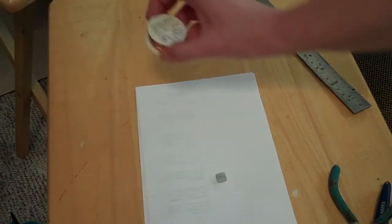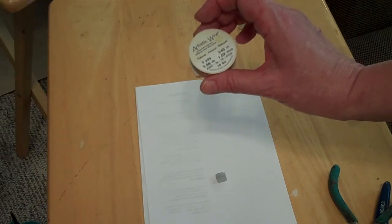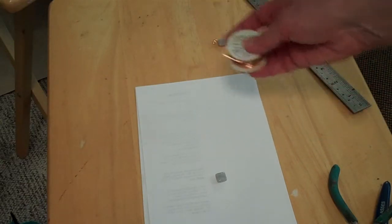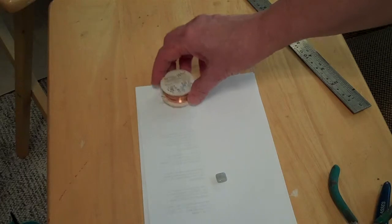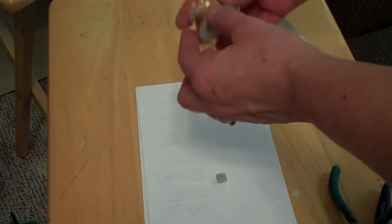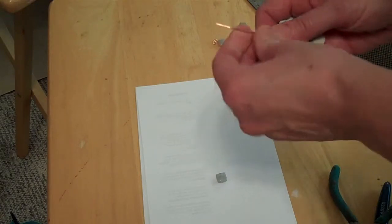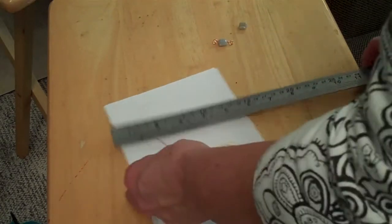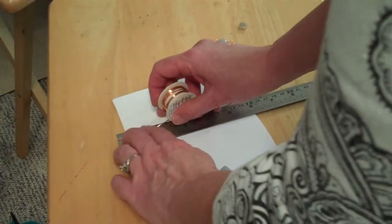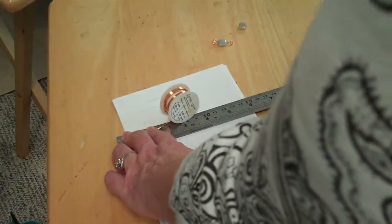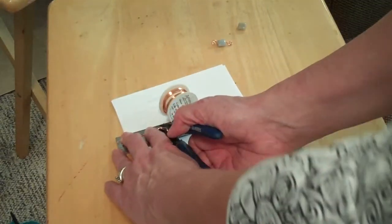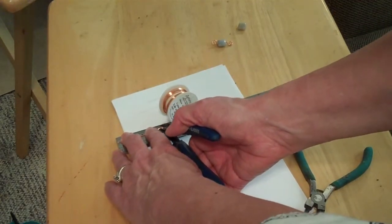And I have some 18 gauge copper wire. You can also use 20 gauge, but the 18 gauge is going to be a little bit thicker. I want to measure off 2 inches of my wire. So I'm going to just measure 2 inches on my ruler and then cut it with my wire cutters here.